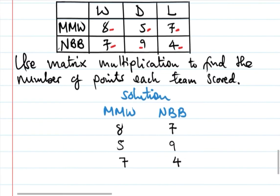To solve this, we write the points matrix with win, draw, and loss: 3 for a win, 1 for a draw, and 0 for a loss. To multiply, we take row times column.